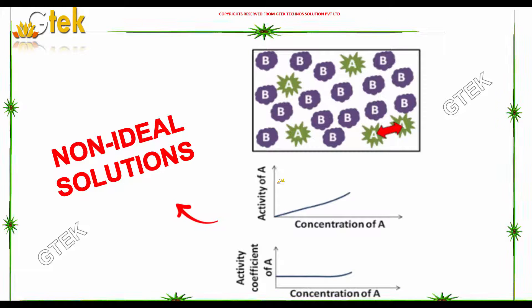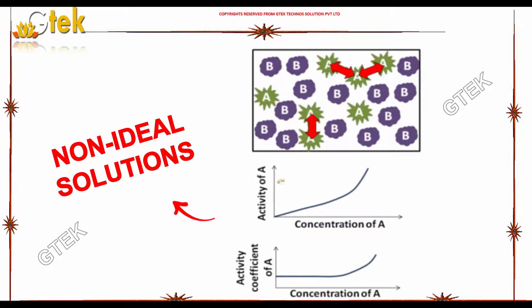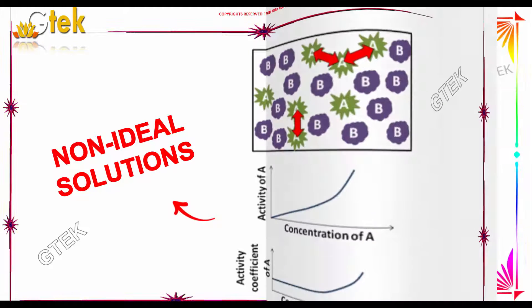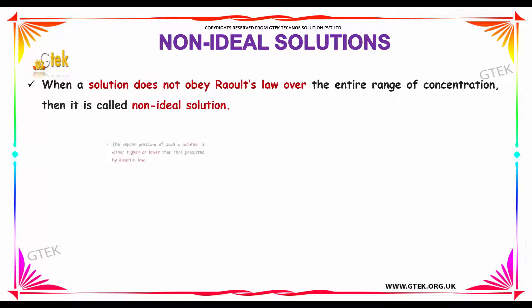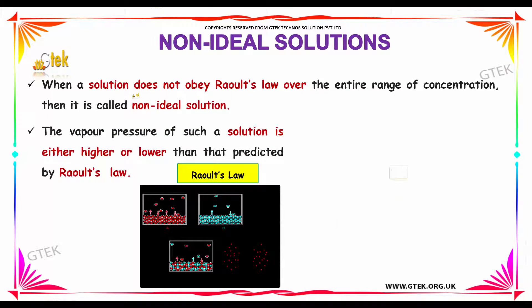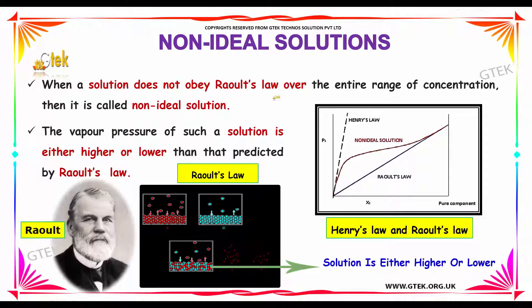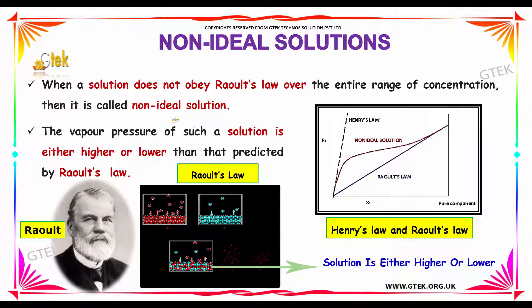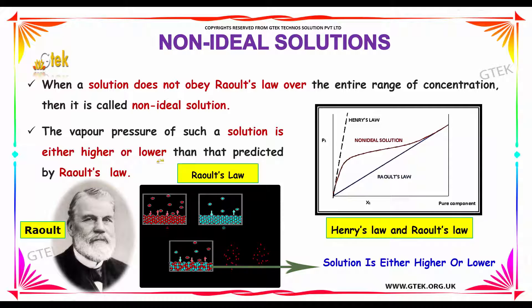Let's move on to non-ideal solutions. When a solution does not obey Raoult's law over the entire range of concentration, it is called a non-ideal solution. The vapor pressure of such a solution is either higher or lower than that predicted by Raoult's law.